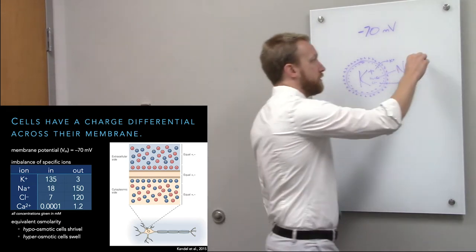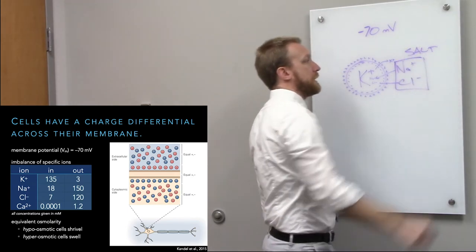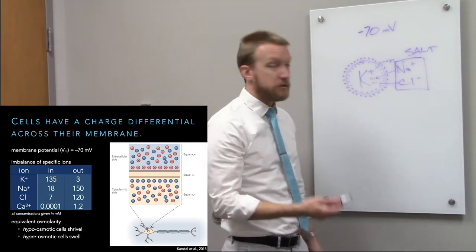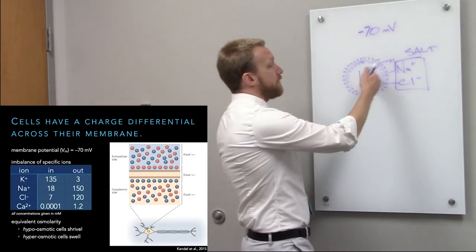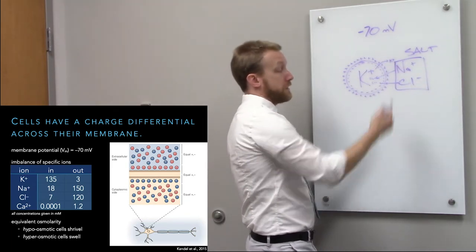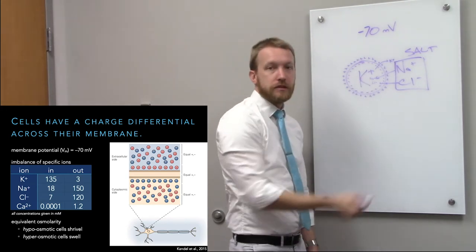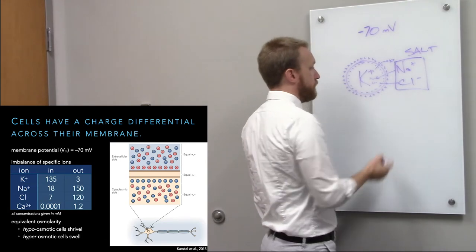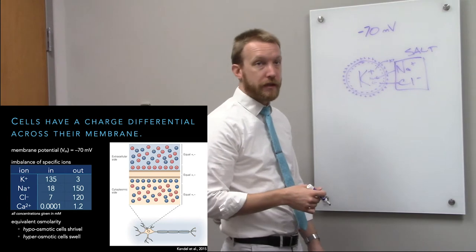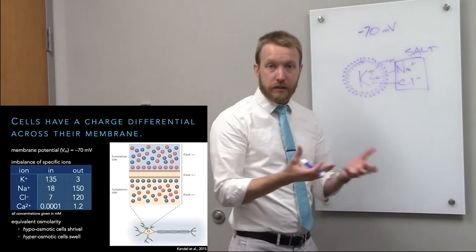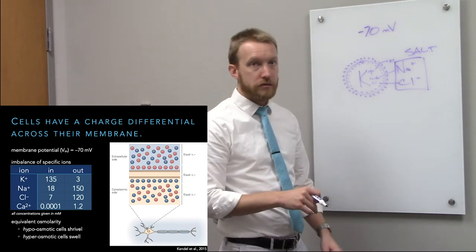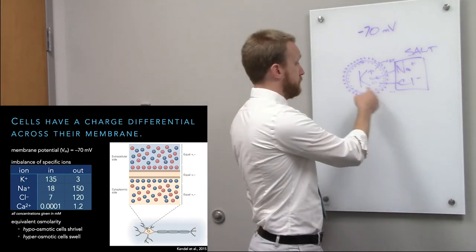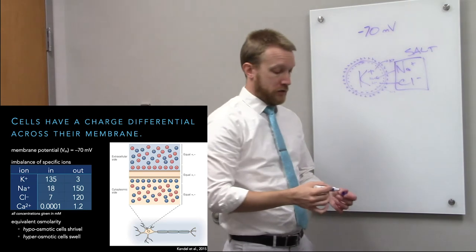An easy mnemonic: sodium and chloride is salt, and life started in salt water. So outside we have high sodium and chloride; inside we bumped up potassium instead. The last ion, calcium, has essentially no detectable level inside because calcium and phosphate crystallize at millimolar concentrations, so we keep it very low. There's a small amount outside — still more than inside — so calcium will want to flow in.